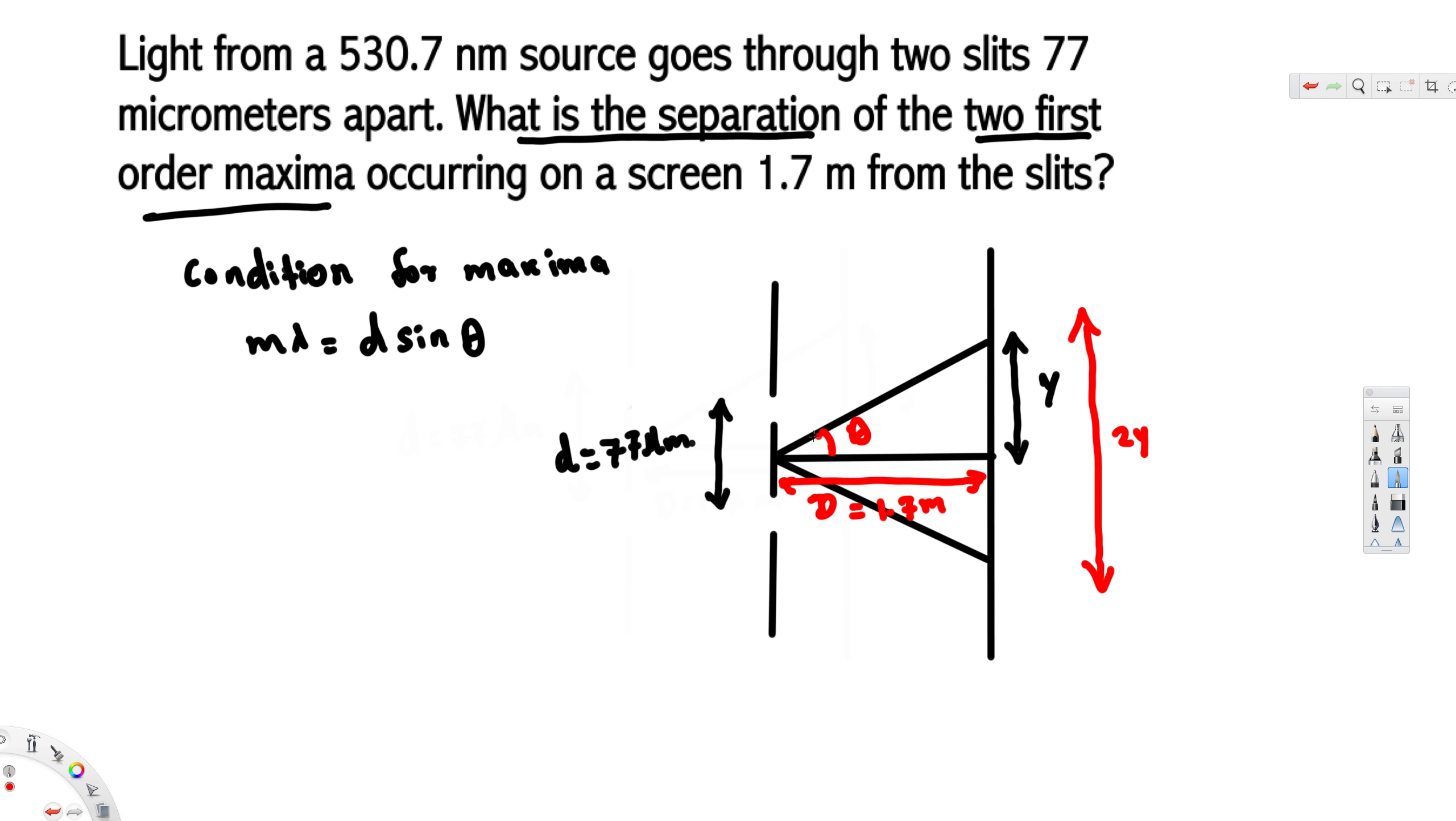Because when we deal with this two-slit separation equation, we deal with a very small angle. When we have a very small angle, sine theta is approximately equal to tan theta. So we can say this is d tan theta. We know that tan theta is opposite over adjacent, so instead of sine theta we can replace that one with y over D, because y is opposite and D is adjacent.